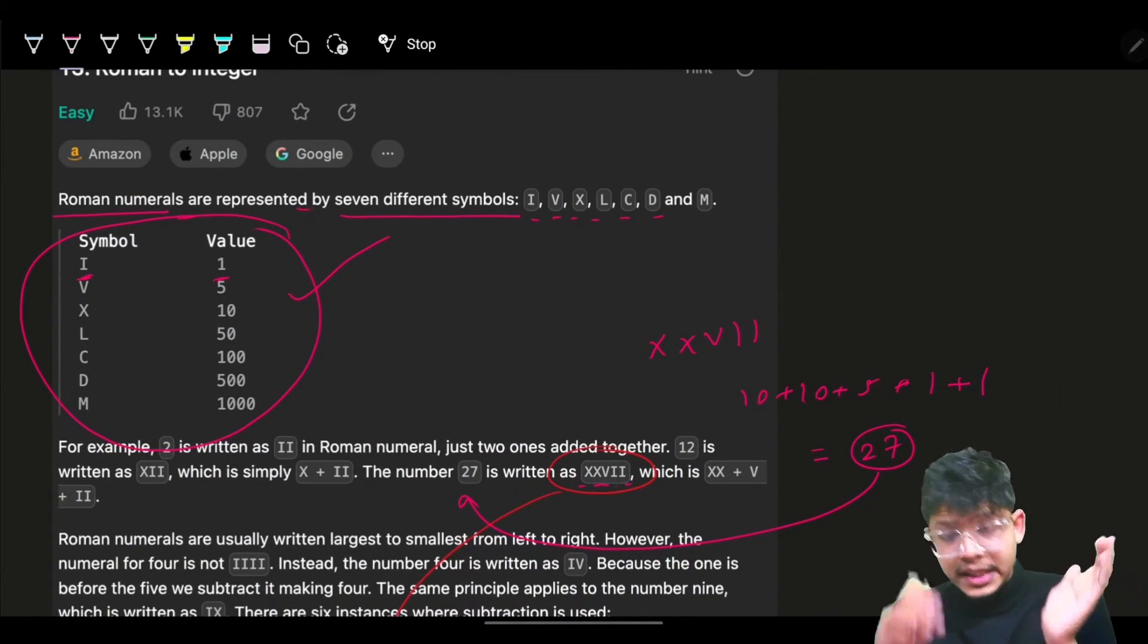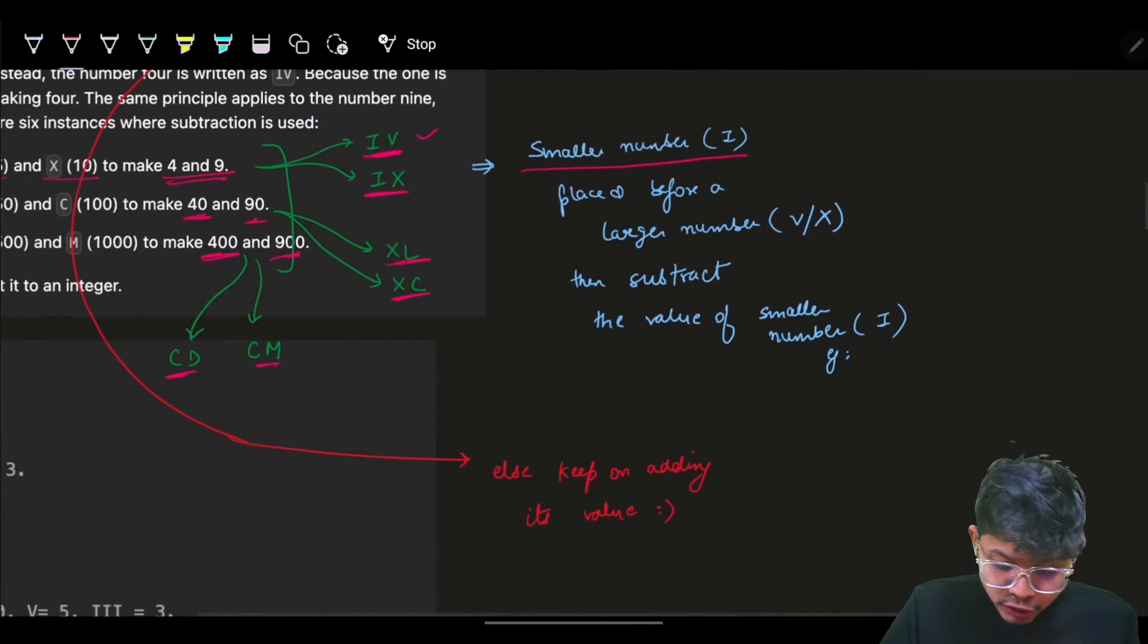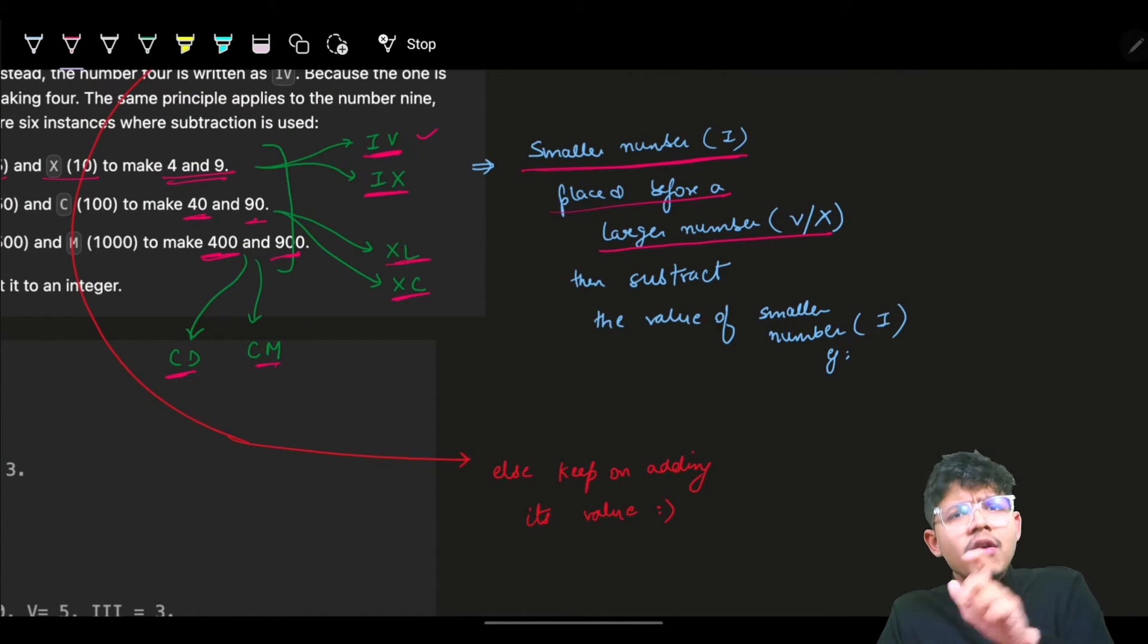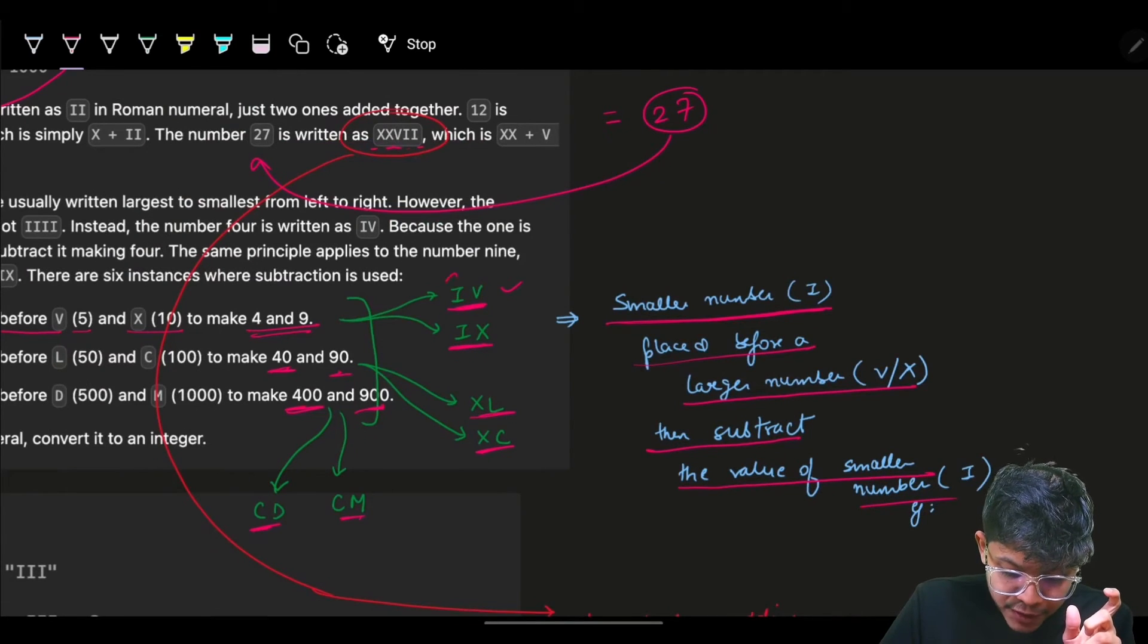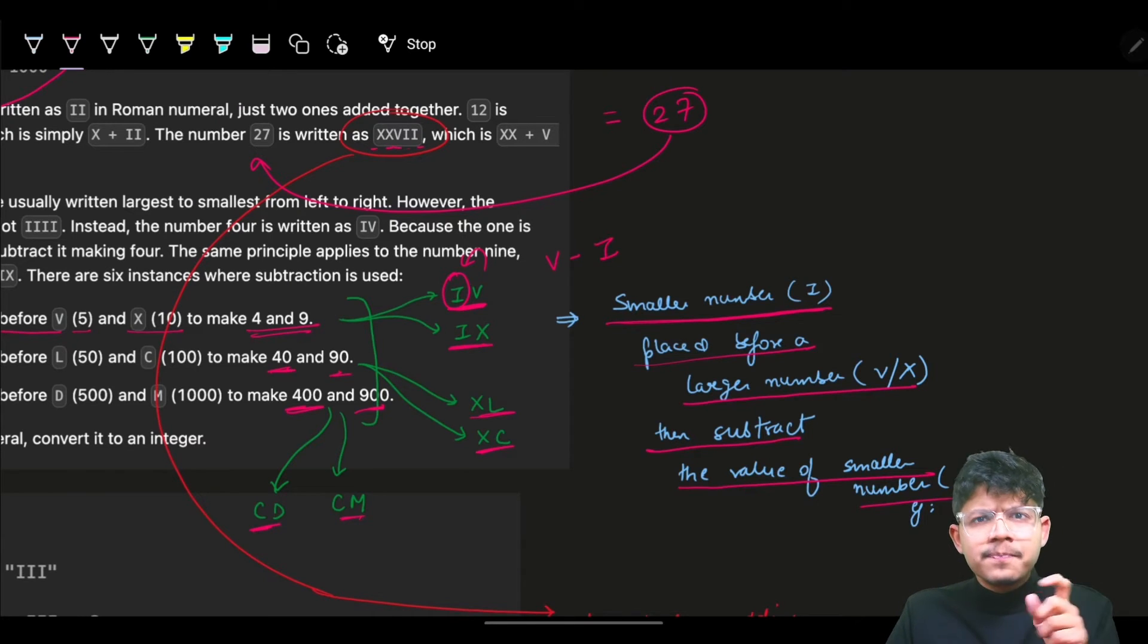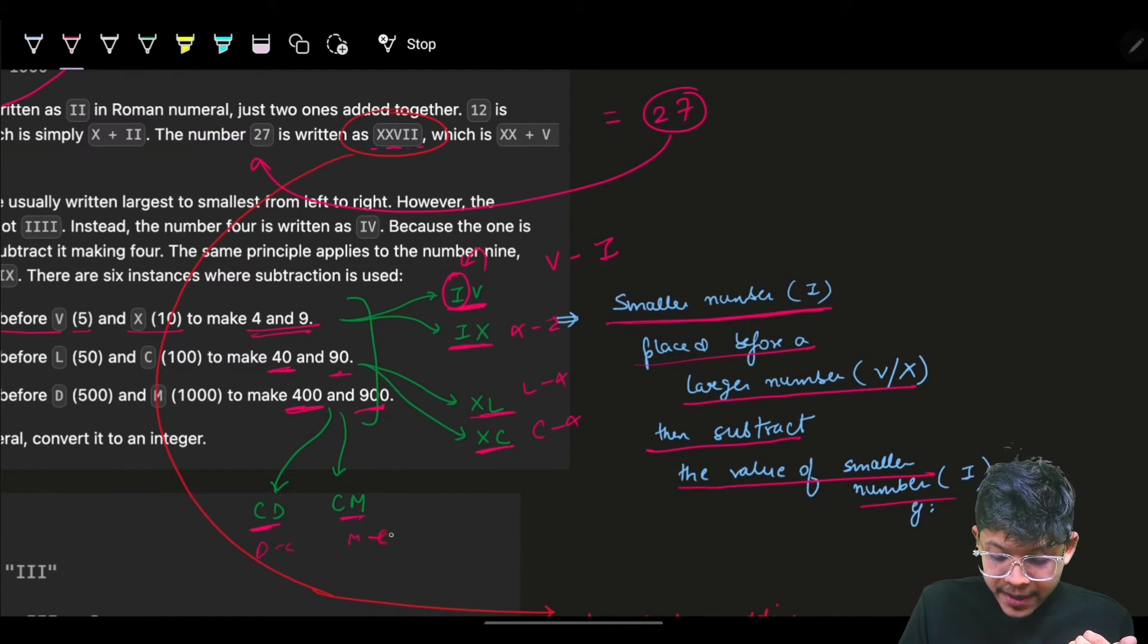When a smaller number is placed before a larger number, I subtract that number from the large number. So I do V minus 1, X minus I, L minus X, C minus X, D minus C, M minus C - when a smaller number is placed before a larger numeral, I'm subtracting to get the actual value.